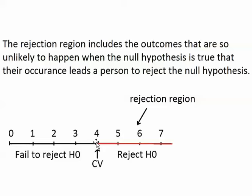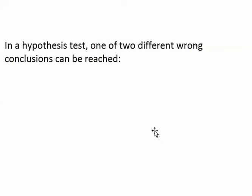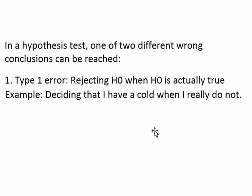The logic is that outcomes in the rejection region are so unlikely to happen when the null is true that they suggest the null should be rejected — you should say that something appears to be happening. In a hypothesis test, one of two wrong conclusions can be reached, because it is not a proven conclusion. You can make a type 1 error, which is rejecting H0, the null, when it is actually true. This is when you say that something is happening and the null is false, but in reality nothing is happening and your outcome just happened by chance.